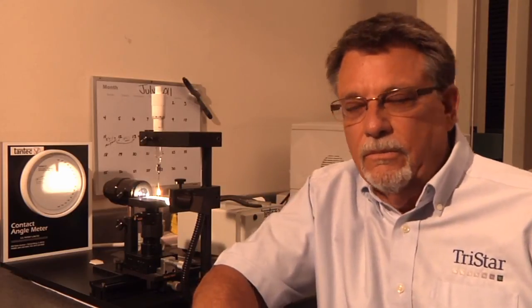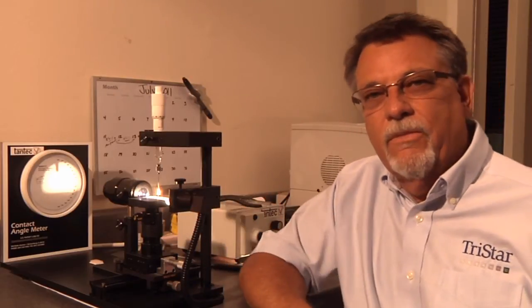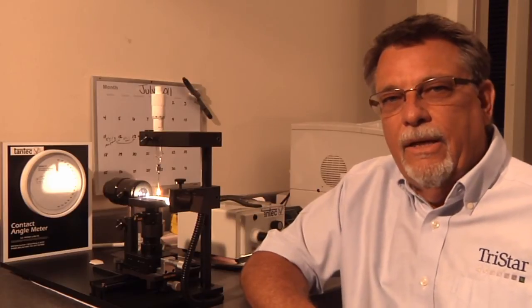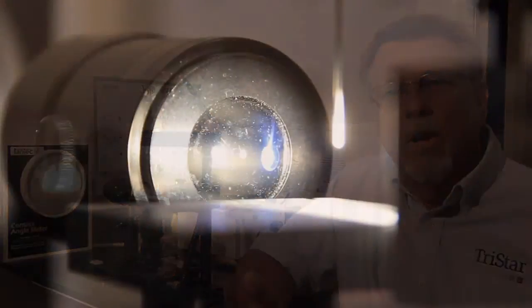Well, this is how we do it. This device is called a goniometer or a surface contact meter, and what this allows us to do is take a look at a piece of material, whether it be a plastic or an elastomer.